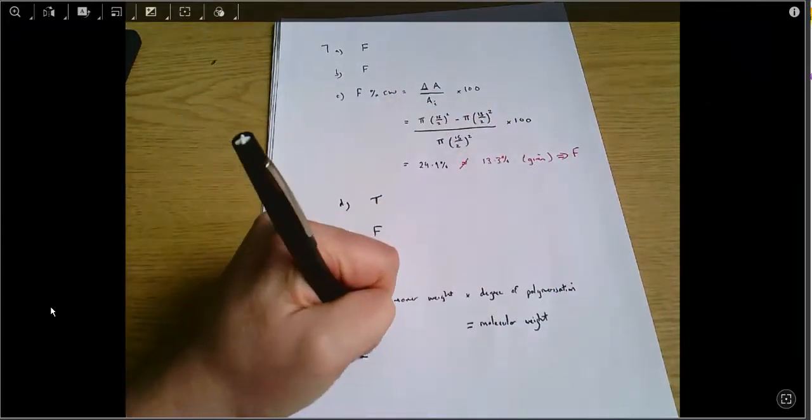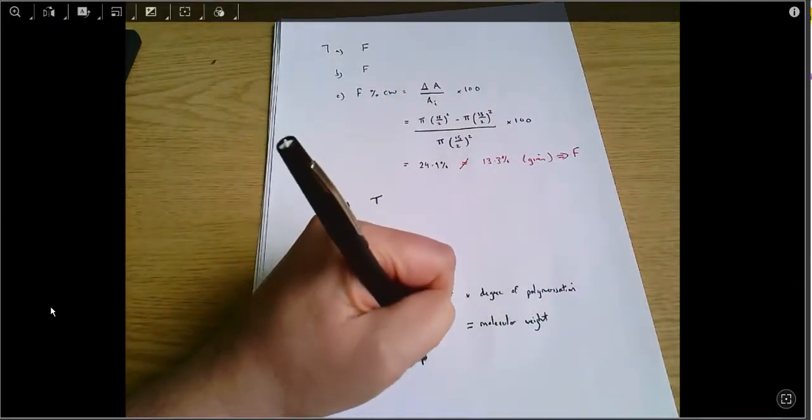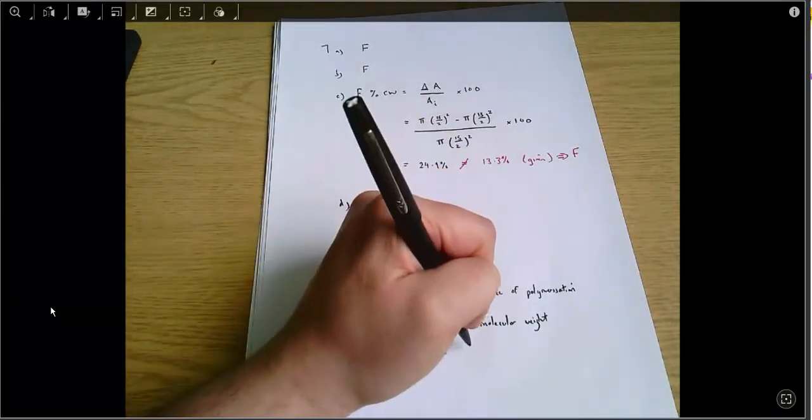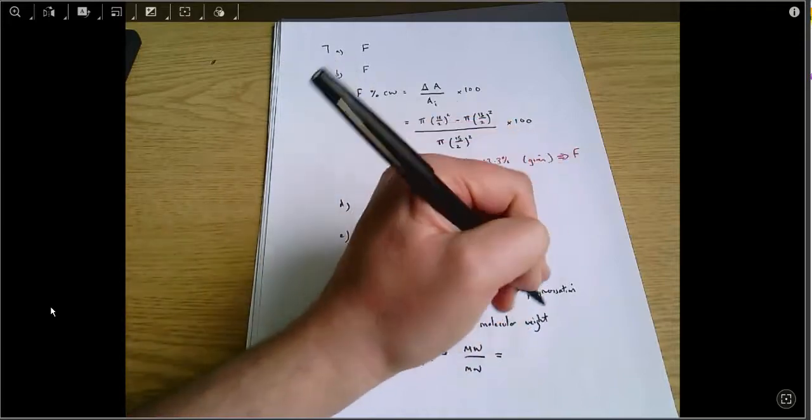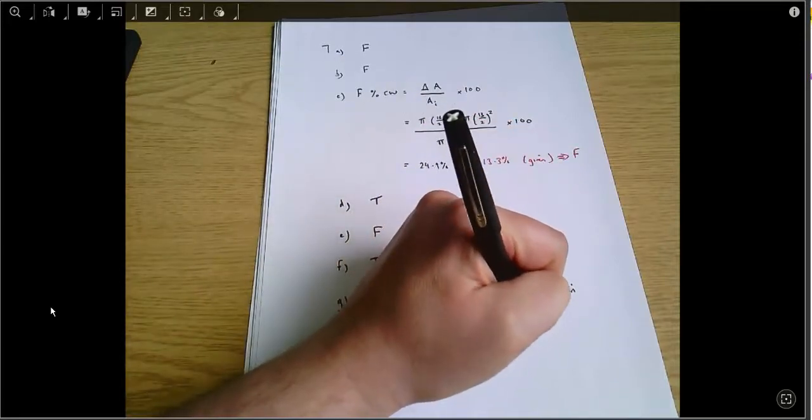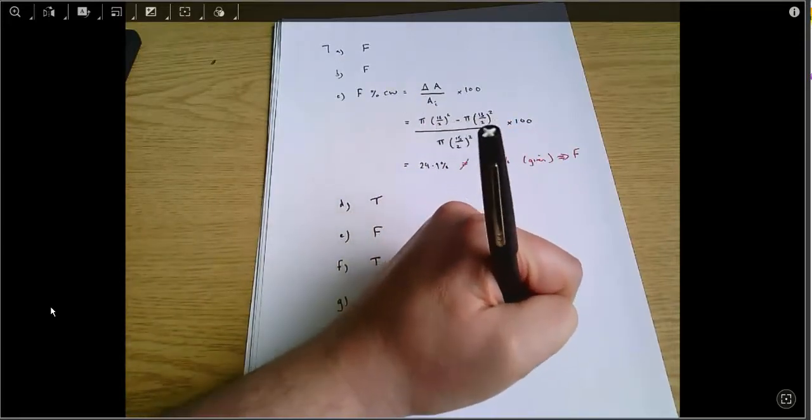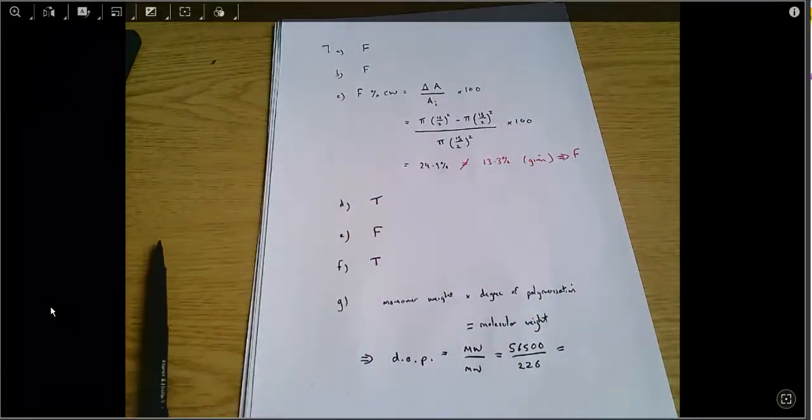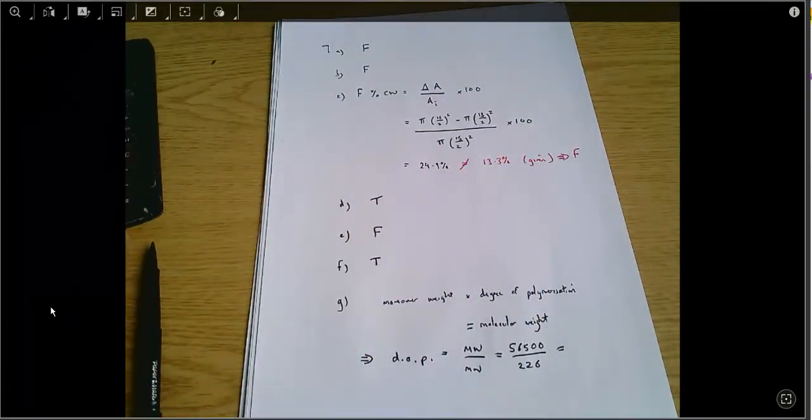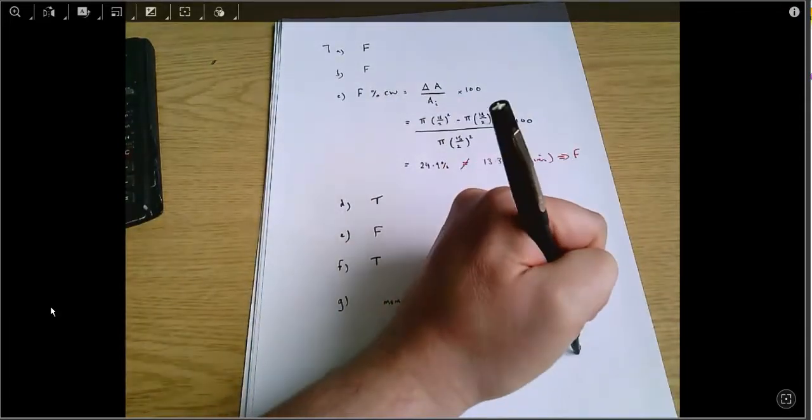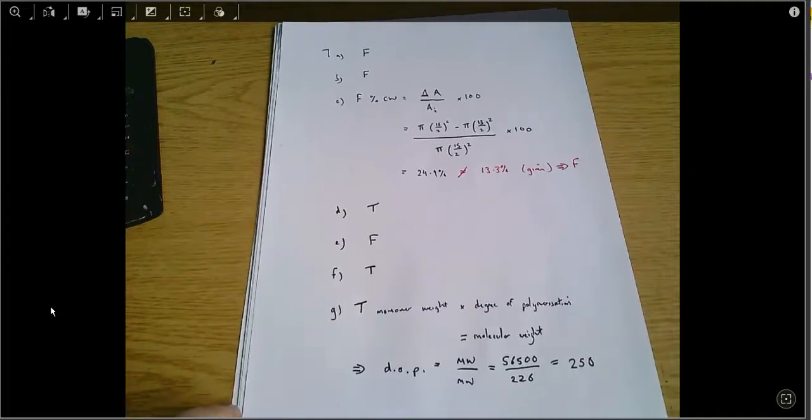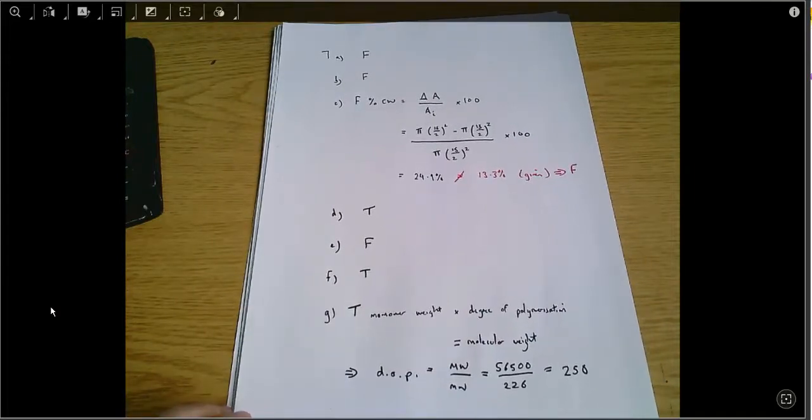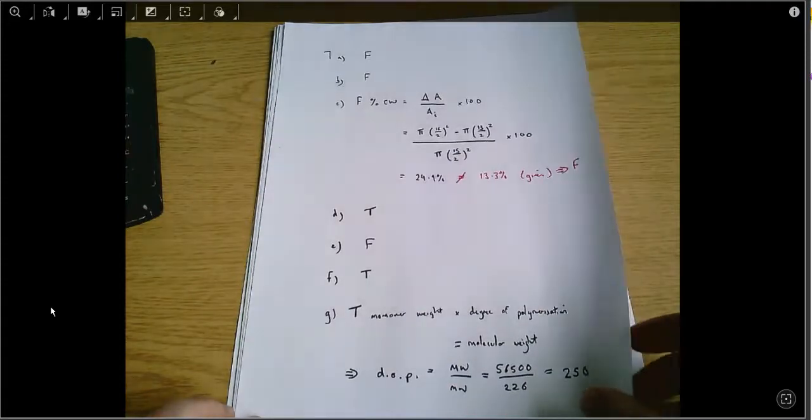So here the degree of polymerization equals the molecular weight divided by the monomer weight, which equals 56,500 divided by 226, and that comes out as 250 which is what suggested in the question so that is true. So the answers are in order: false, false, false, true, false, true, true, and that's seven marks for those.